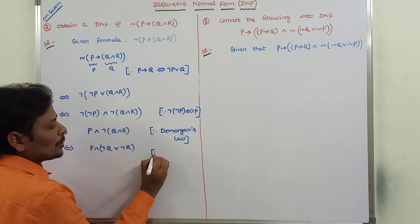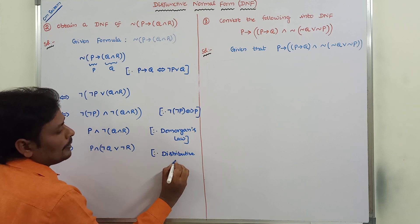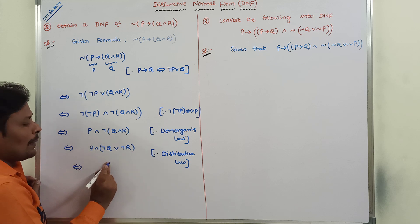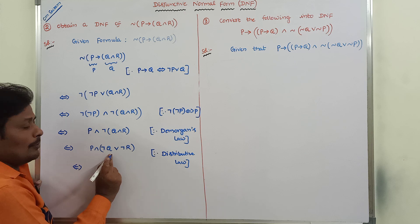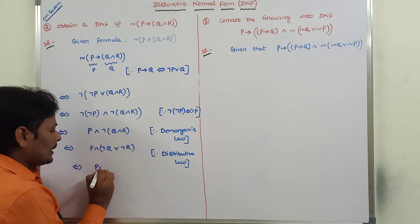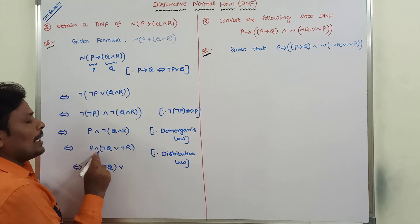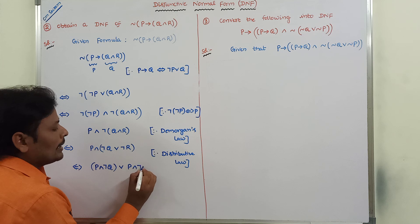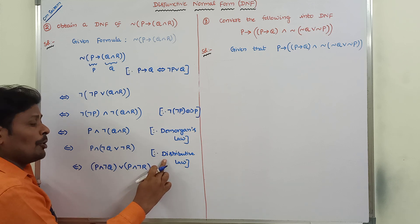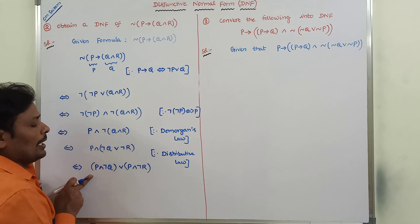Now we apply the distributive law. P and is multiplied with every component within the parenthesis. P and (negation Q or negation R) becomes (P and negation Q) or (P and negation R). After applying the distributive law, the expression is converted into this equivalent step.